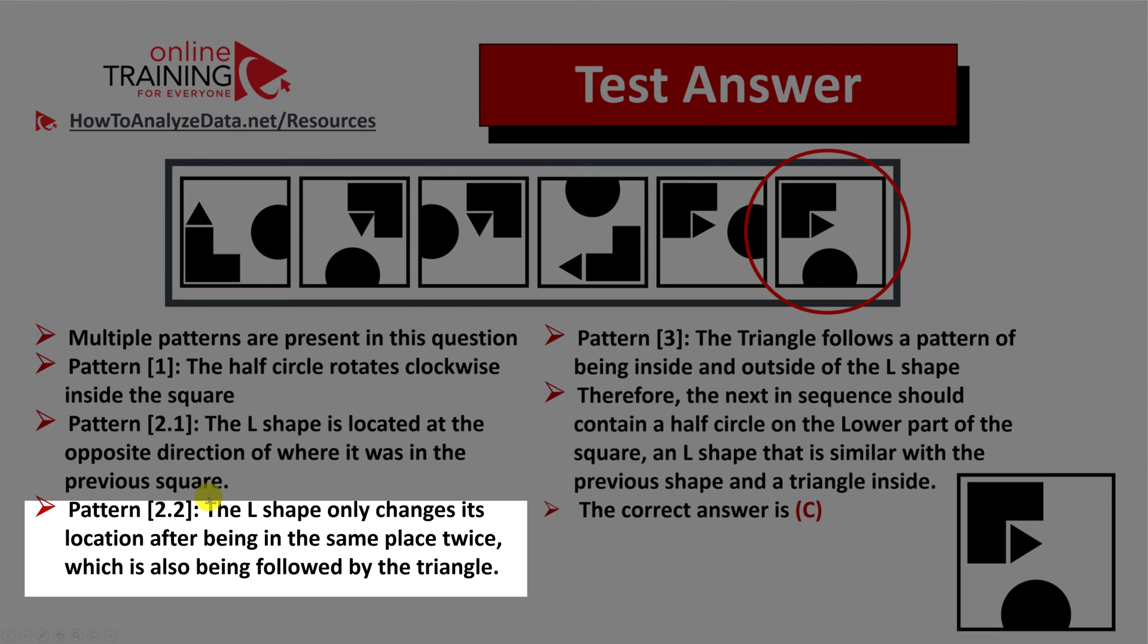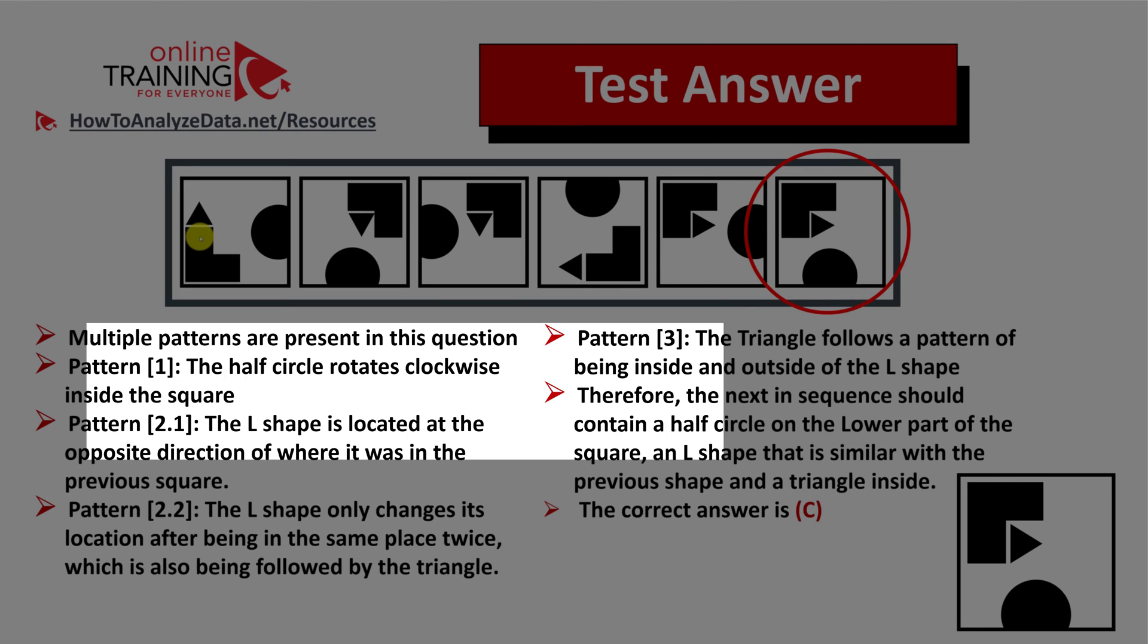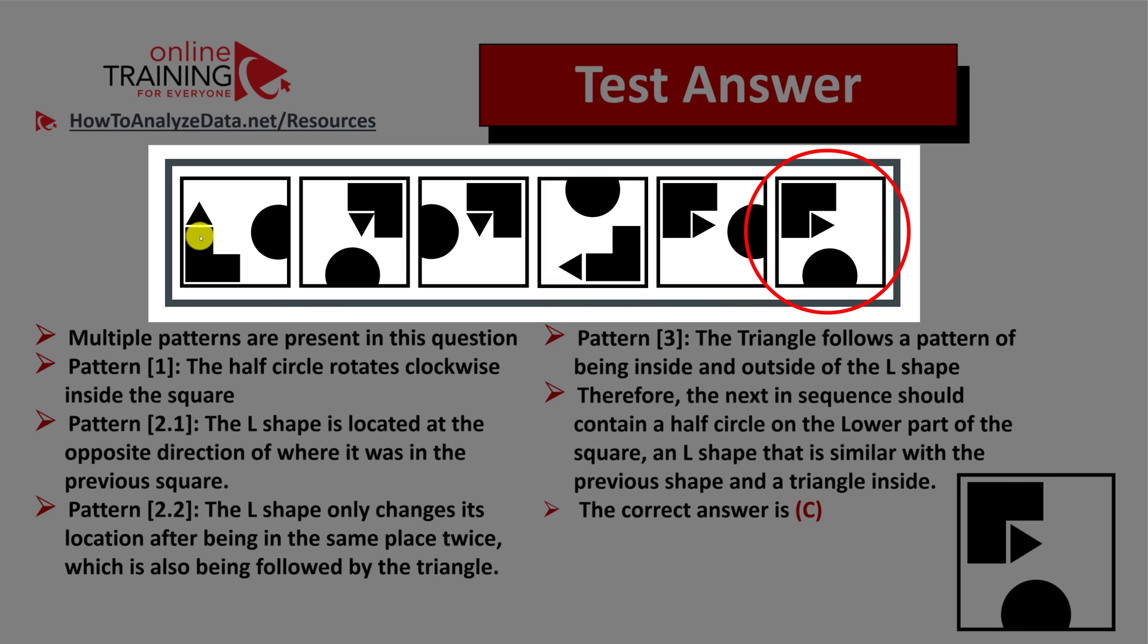And then the third pattern, also related to the L shape, is where the L shape only changes its location after being in the same place twice, which is also being followed by the triangle. As you can see, the L shape in the first square is located in the bottom left corner. And then in the next two shapes, it's located in the upper right, and then in the upper right again. Then it changes position and goes into the bottom right. And then the next two positions, according to the pattern, would be upper left and then upper left again.